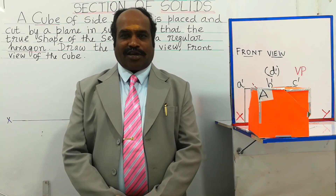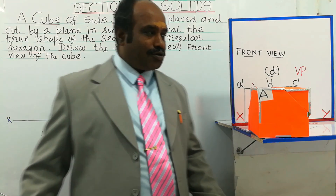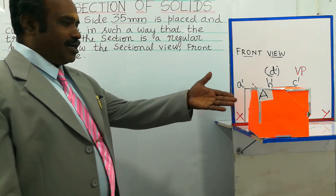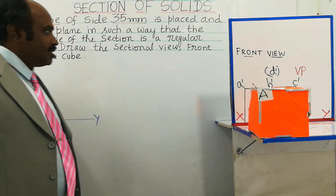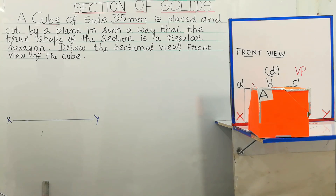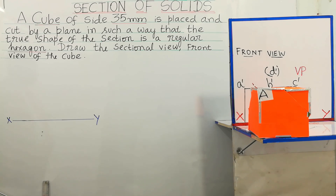Yes, the topic is section of solids. Consider a question given about a cube. A cube of side 35mm is placed and cut by a plane in such a way that the true shape of the section is a regular hexagon. Draw the sectional view and front view of the cube.